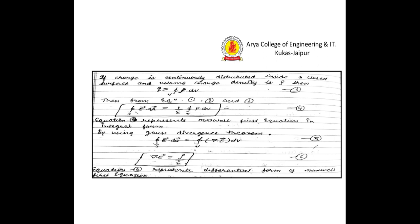If charge is continuously distributed inside a closed surface and volume charge density is rho — volume charge density means charge per unit volume — then Q is equal to the volume integration of rho dV. Then from these equations we can write: surface integration of E dot dA is equal to 1 upon epsilon times volume integration of rho dV. This equation represents Maxwell's first equation in integral form.